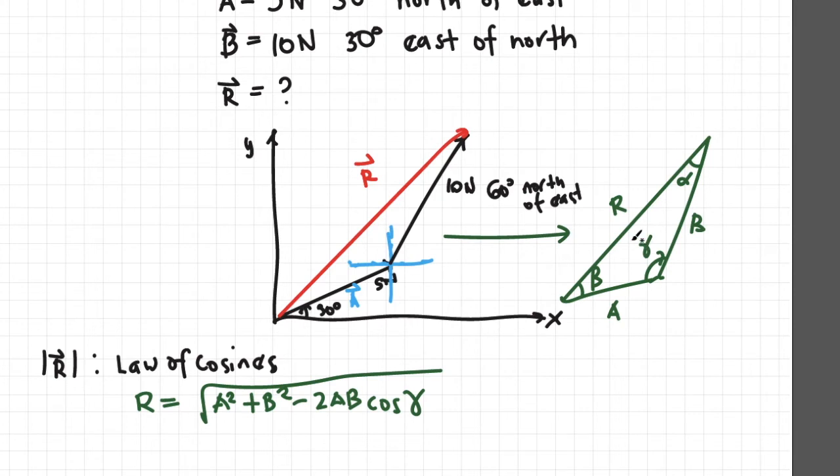Now apparently, the gamma here can be calculated using this corner of the triangle here. So remember that this is 30 degrees. Apparently, this is 90 degrees.